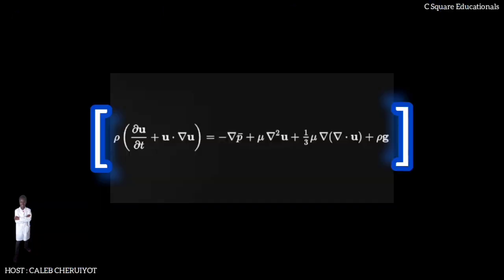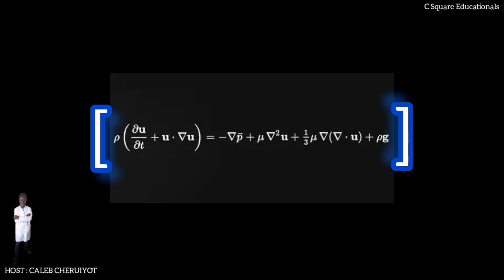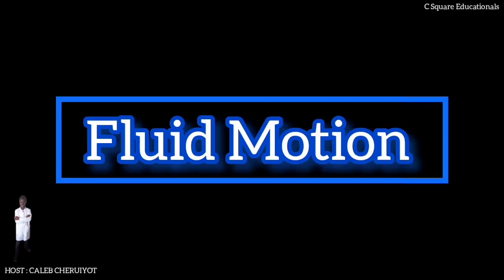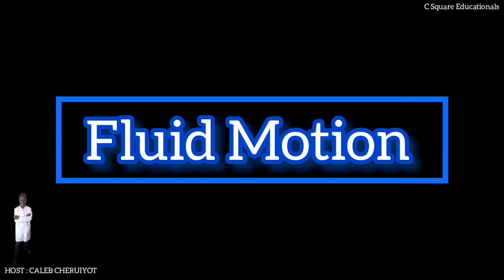The Navier-Stokes equations mathematically express conservation of momentum and conservation of mass for Newtonian fluids. They are sometimes accompanied by an equation of state relating to pressure, temperature and density. They arise from applying Isaac Newton's second law to fluid motion, together with the assumption that the stress in the fluid is a sum of a diffusing viscous term proportional to the gradient of velocity and a pressure term describing viscous flow.